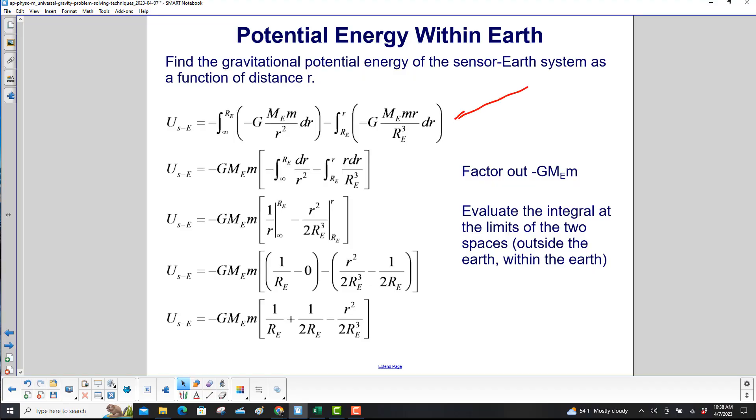Here's the expression from the previous slide. The first thing we're going to do is factor out minus GM_e m. We factor the minus out because we know the potential energy is going to wind up to be negative. So now we have an integral of dr over r squared and r dr over R_e cubed, where R_e is a constant.